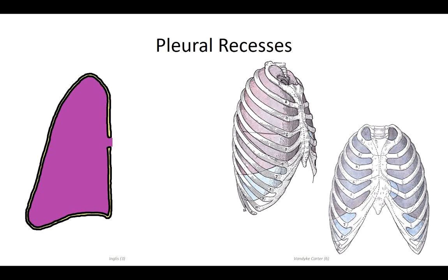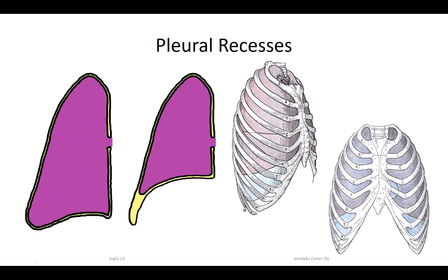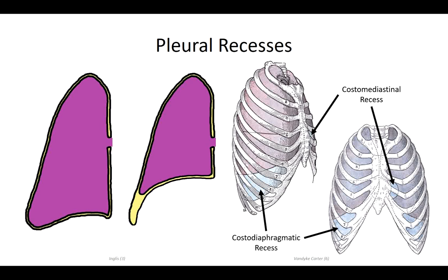All portions of the visceral pleura lie in contact with the parietal pleura, but the same cannot be said for the parietal pleura, particularly during expiration. As the lung deflates and recedes within the thoracic cavity, certain regions of the parietal lining fold in and contact one another, similar to the pages of a magazine as it's being closed. These infoldings are referred to as pleural recesses. The costo-mediastinal recess is found anteriorly, where costal pleura overlying the sternum makes contact with the mediastinal pleura. Posterolaterally, the costo-diaphragmatic recess forms as the diaphragm rises during expiration and the peripheral margins contact the inferior margins of the costal pleura.